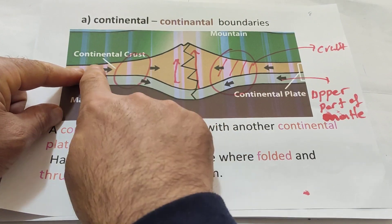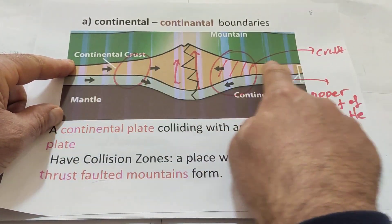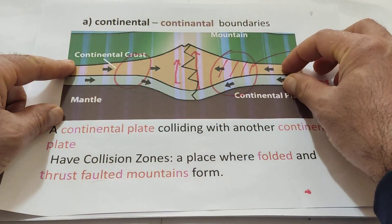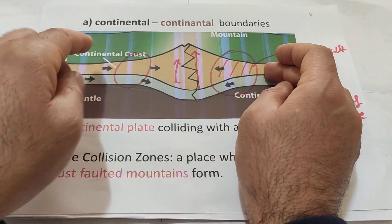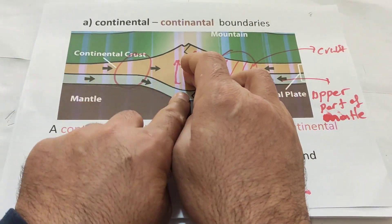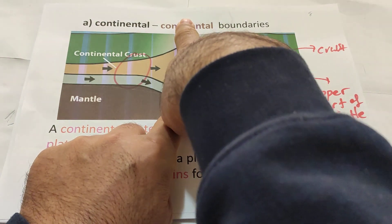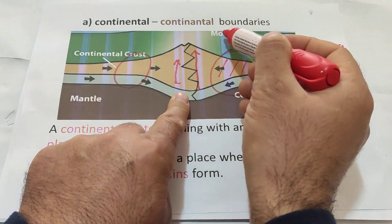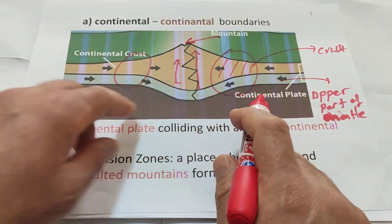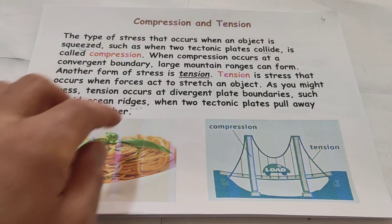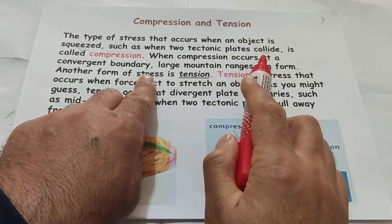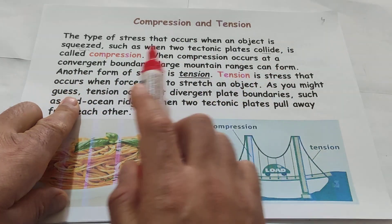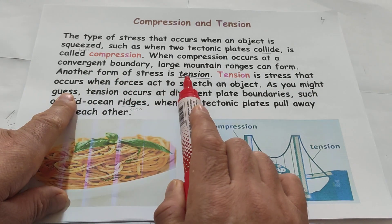Can you see? These are lithosphere layers, these are crust layers, and these are the upper part of the mantle. Both of them together we call lithosphere. Two lithosphere layers push each other, so what happens? The part of the land rises up, and when the part of the land rises up, it is going to become a mountain — the mountain forms. When compression occurs at a convergent boundary, large mountain ranges can form.